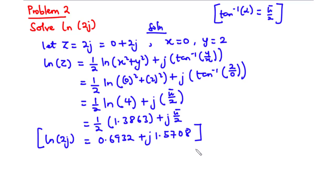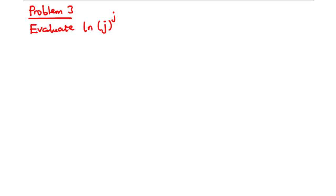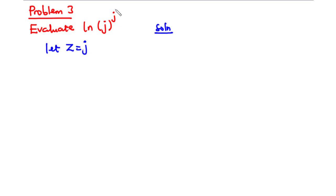Now let's move on to Problem 3. For Problem 3, we are going to evaluate ln of j to the power j. Because we are finding the principal value, we will use equation 3. First, let z equal j, which is 0 plus j, so x equals 0 and y equals 1.